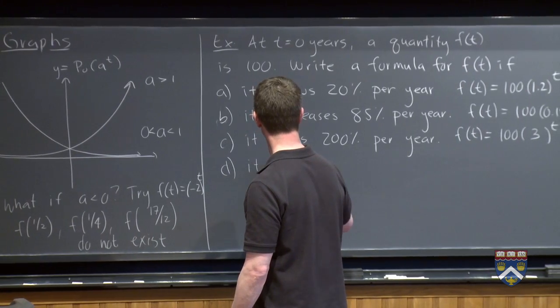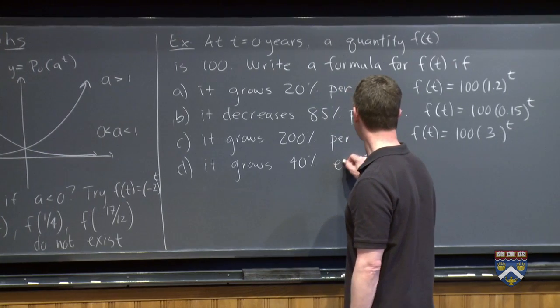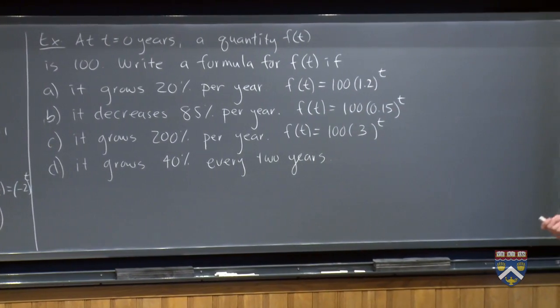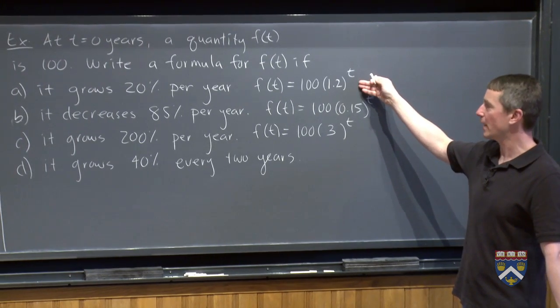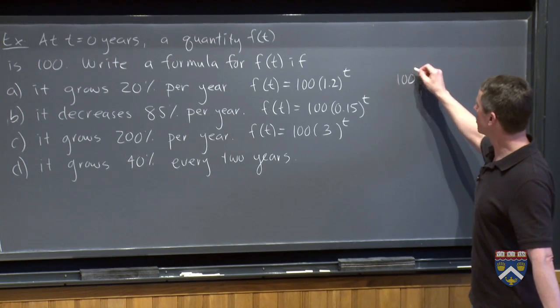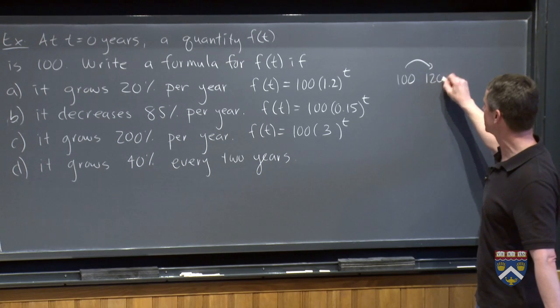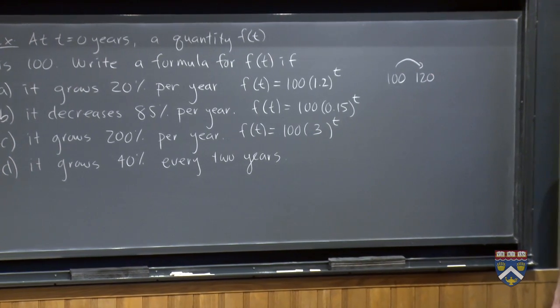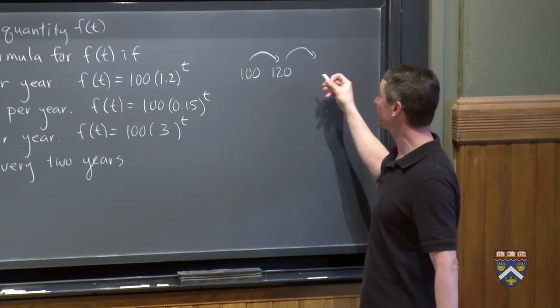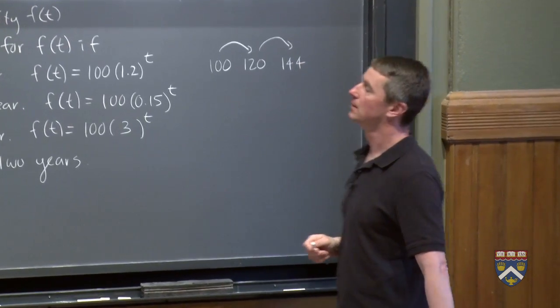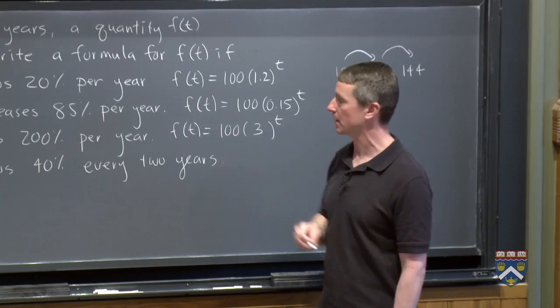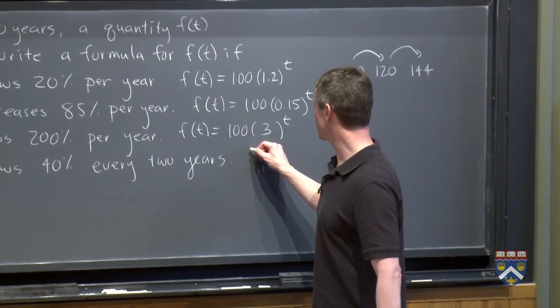How about this one? It grows 40% every two years. Now first thing to ask, is this the same as part A? Part A we were growing 20% a year. Is that the same as growing 40% every two years? Well, let's check. In part A we started with 100, we grew 20%, meaning after one year we had gained 20% and we were at 120. But now because this isn't a linear function, we're supposed to grow in the next year 20% of this amount. So if we gain 20% of 120, that means we gain another 24 and we land at 144 after two years. So because of this effect of compounding, growing 20% a year is the same as growing 44% every two years. So we know that this is actually a different question. Growing 40% in two years is not the same as 20% a year because of the way exponential functions work.